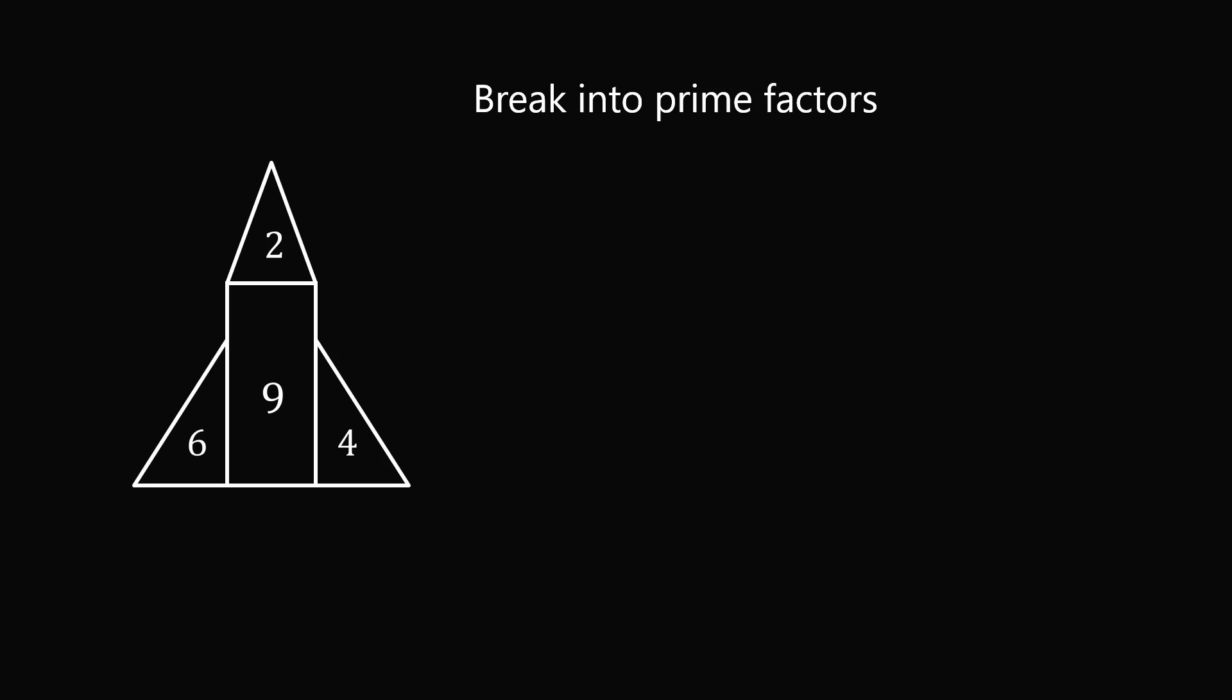Let's look at the prime factors of each number. 2 is already a prime number, 6 is equal to 2 times 3, 9 is equal to 3 times 3, and 4 is equal to 2 times 2. So imagine we try to balance up the prime factors. If we have 2 and 6 on one side, and 9 and 4 on the other, we're only short one factor of 3.